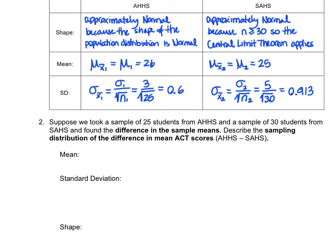Suppose we took a sample of 25 students from American Heritage and a sample of 30 students from St. Andrews and found the difference in the sample means. Describe the sampling distribution of the difference in mean ACT scores, where the direction of subtraction is American Heritage minus St. Andrews. We know that the mean of the sampling distribution of the difference in means equals the difference in population means, because mu sub (x1-bar minus x2-bar) equals mu sub 1 minus mu sub 2. This is what we mean by an unbiased estimator.